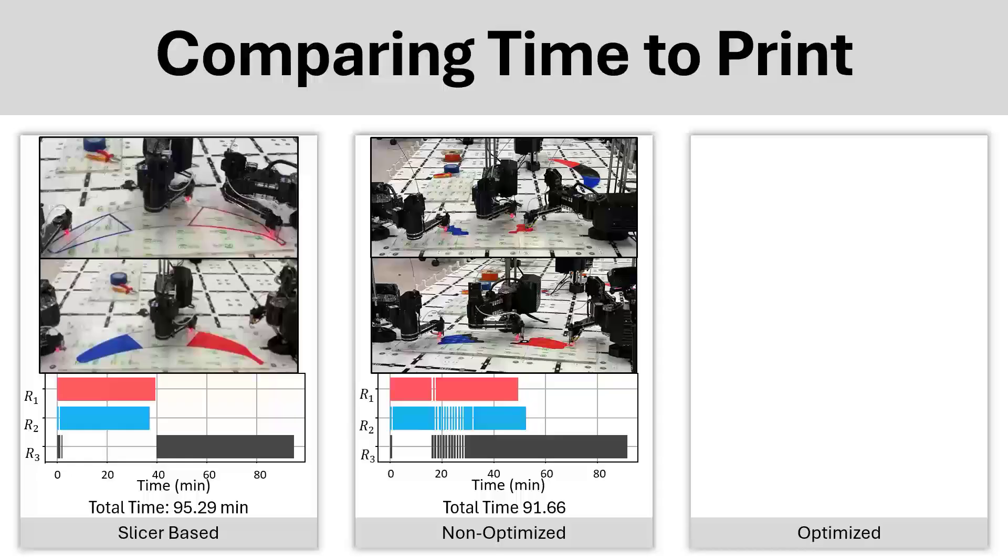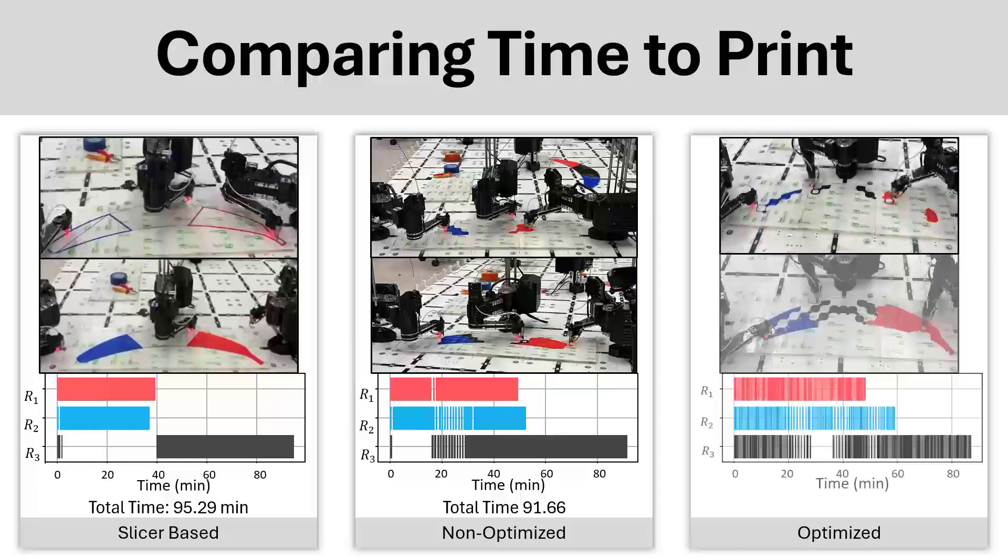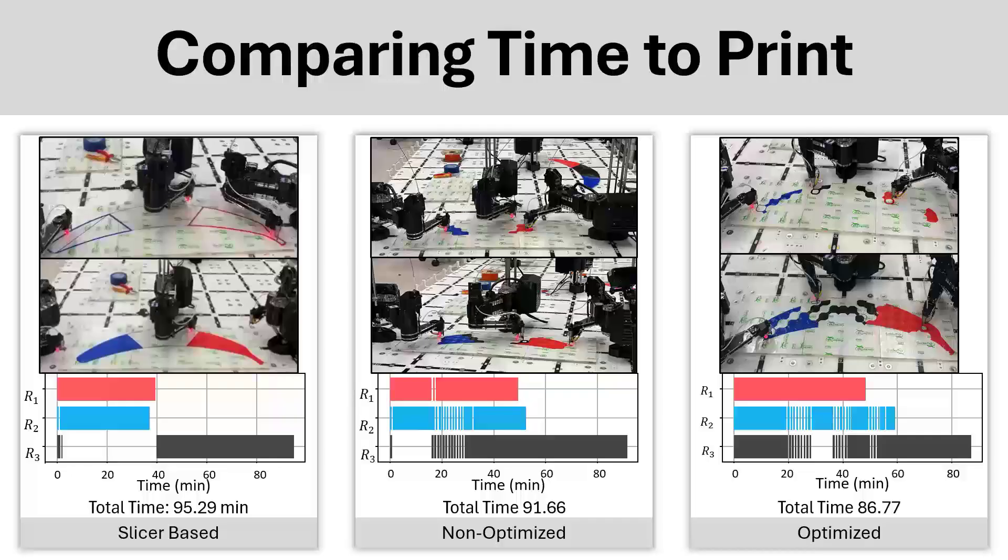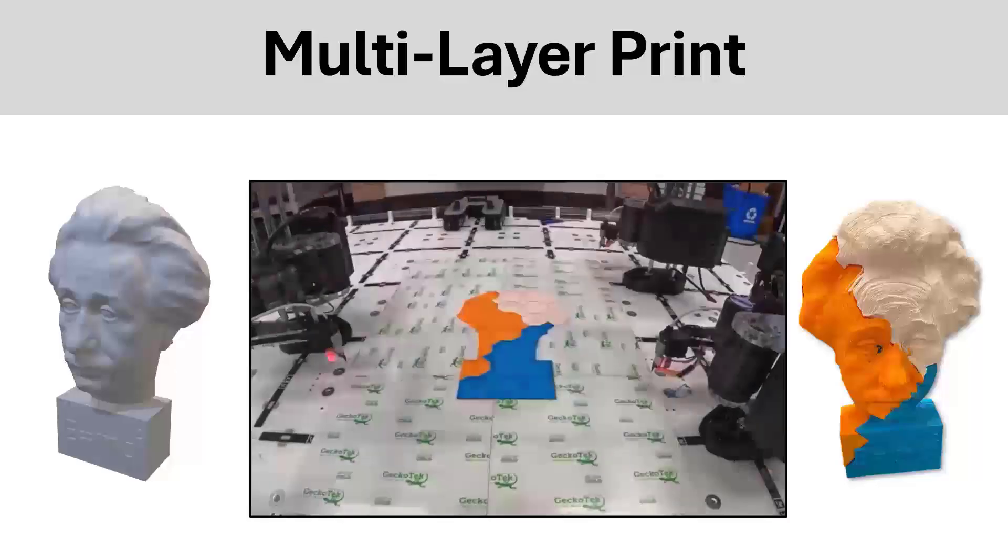However, there is not much collaboration between three robots. Finally, we can look at an optimized approach, where we see a lot of collaboration between all three robots. This is also demonstrated in the total time-saving per layer. By applying optimization at every layer, we can optimize the printing schedule of a large object, in this case printing of an Einstein model.